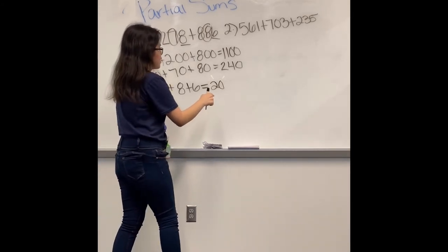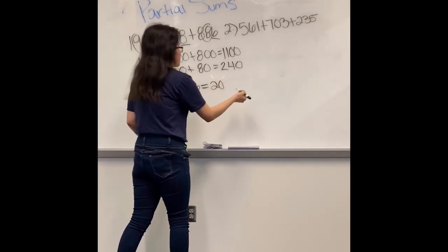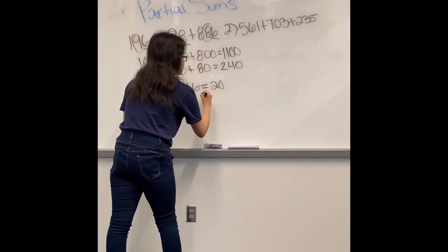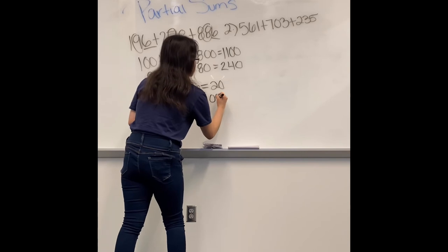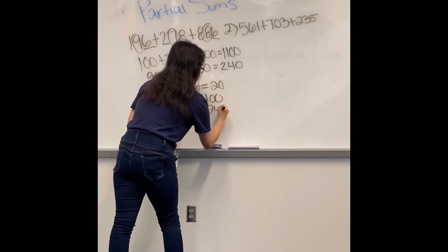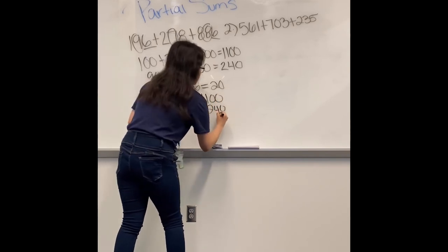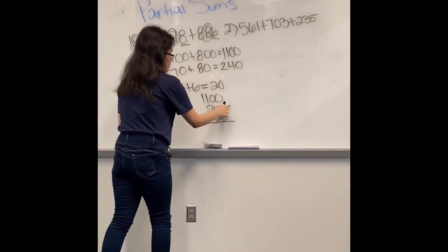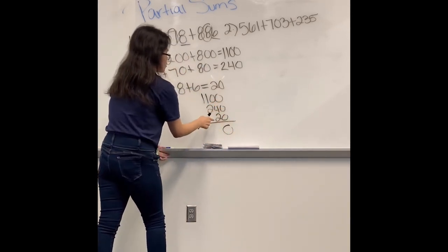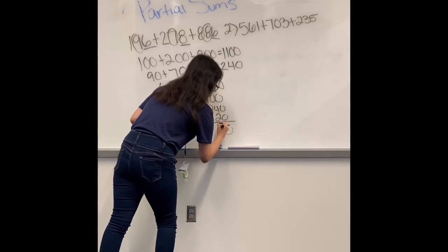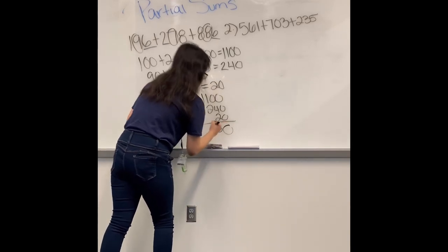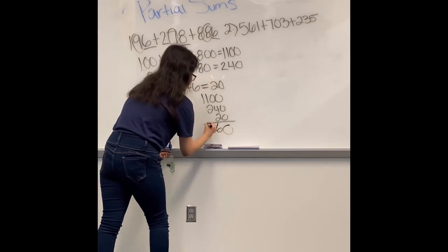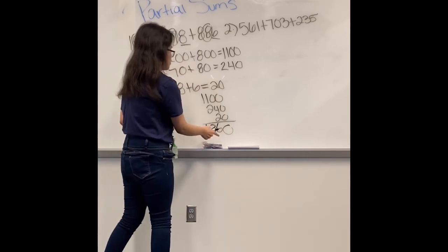This will give you twenty. Now just line them up and add them all — more organized it's one thousand one hundred, two forty, and twenty. This will be: 0, 4 plus 2 is 8 — wait, 3, 6 — and 2 plus 1 which is 3, and 1. So the answer is one thousand three hundred and sixty.